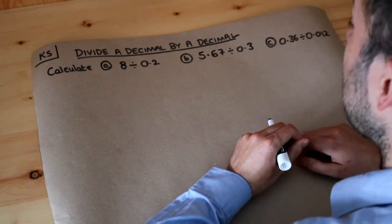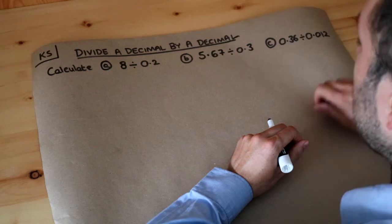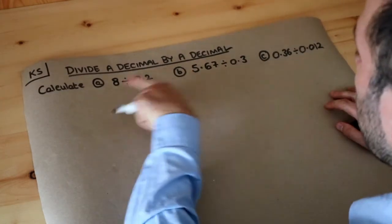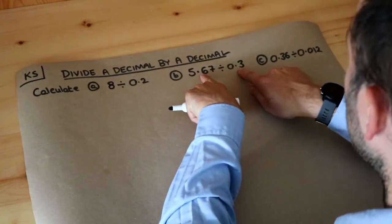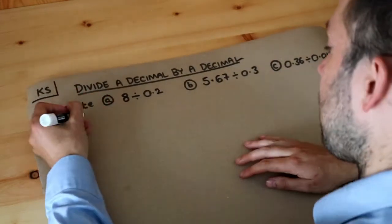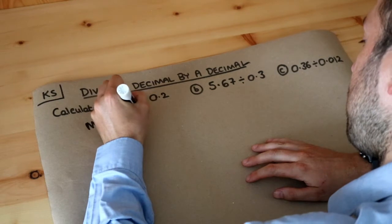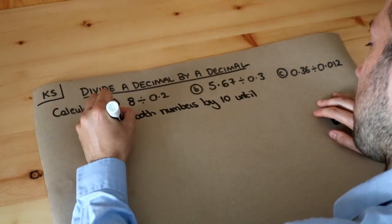Hello and welcome to this Doc Frost Maths key skill video on dividing a decimal by a decimal. We've got these different divisions here, and in all but one of the cases we're dividing a decimal number, something after the decimal point, by a decimal number. Now the strategy is this: multiply both numbers by 10 until you're dividing by a whole number.